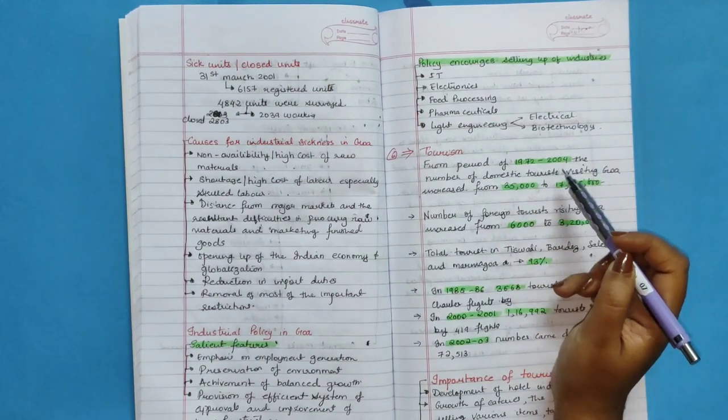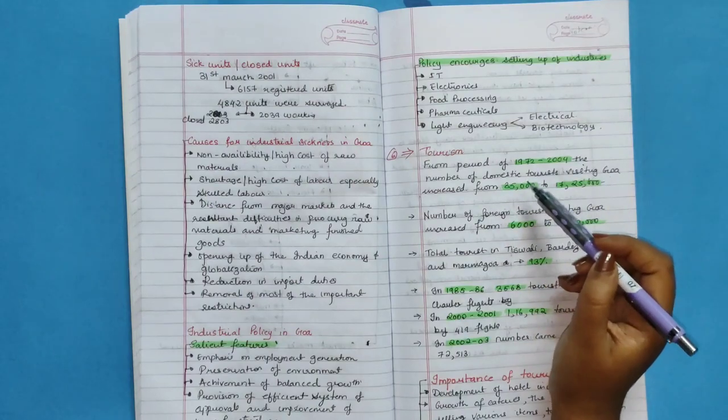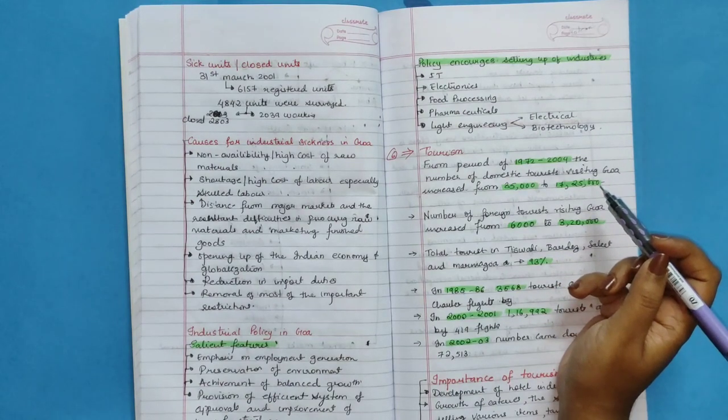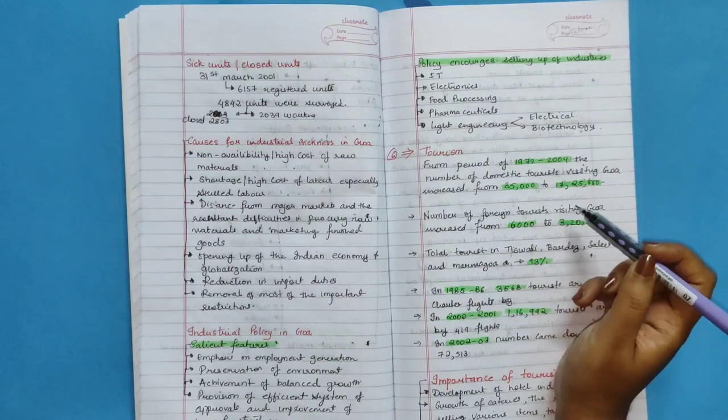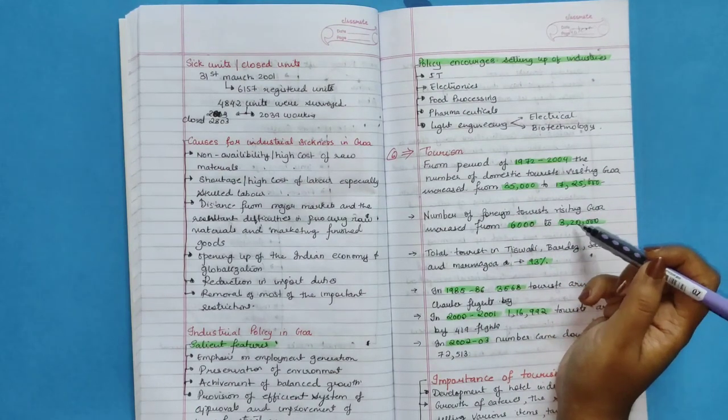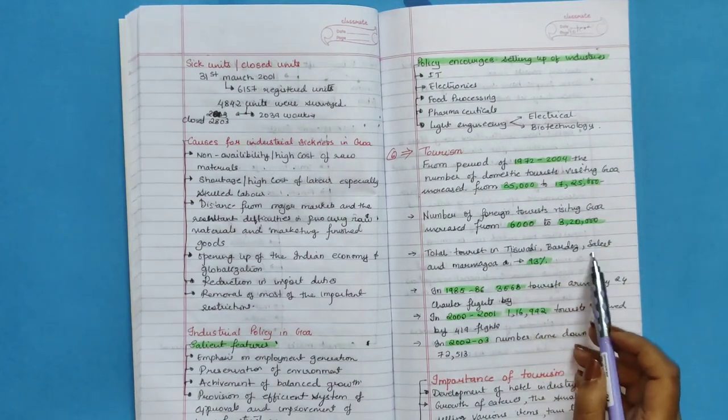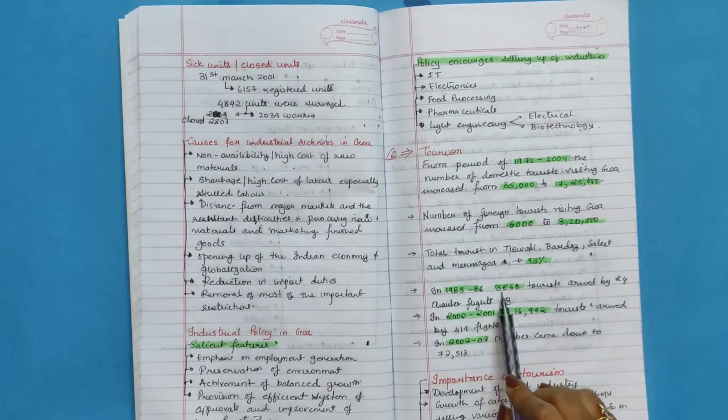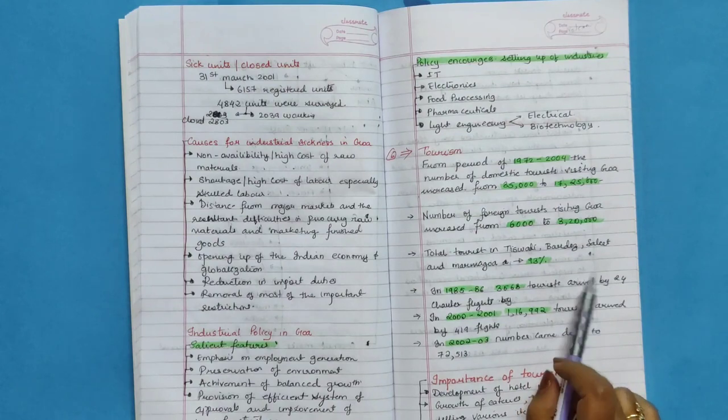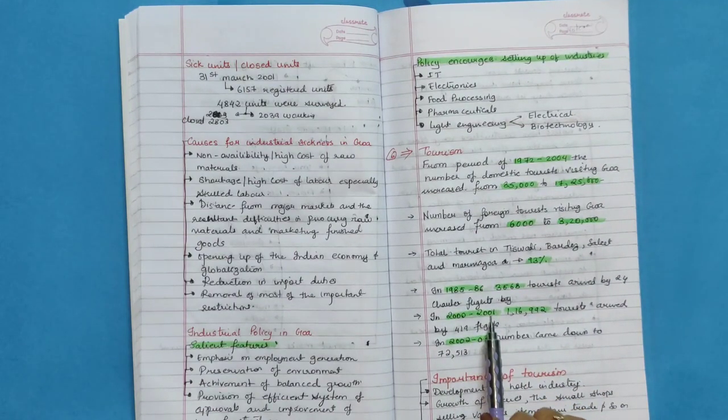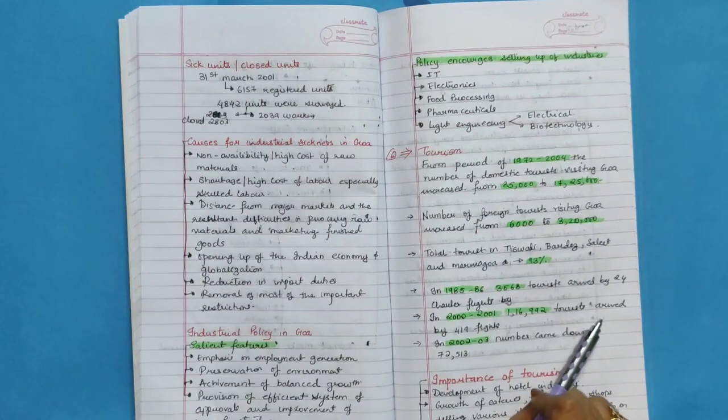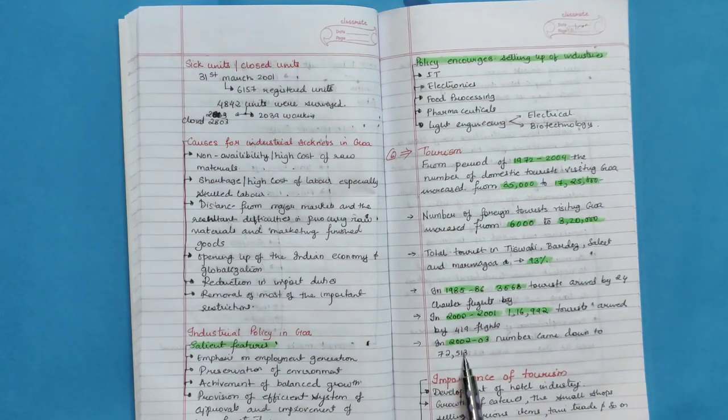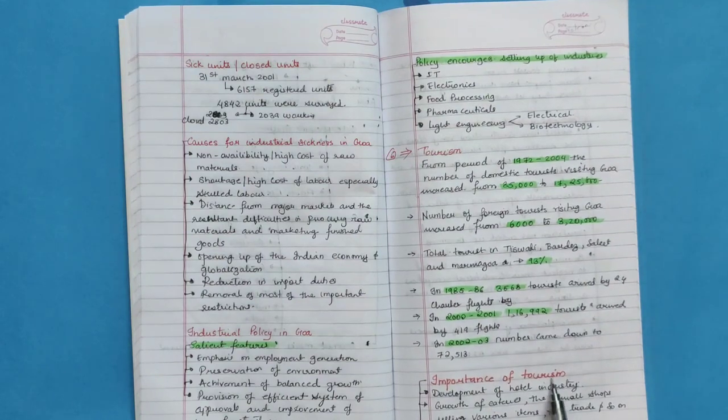Tourism. From period of 1972 to 2004, the number of domestic tourists visited Goa increased from 35,000 to 1,17,25,000. Number of foreign tourists visiting Goa increased from 6,000 to 3,20,000. Total tourist in Tiswadi, Bardez, Salcete and Mormugao is 93%. In 1985 to 86, 3,568 tourists arrived by 24 charter flights. In 2000 to 2001, 1,16,992 tourists arrived by 419 flights. And in 2002 to 2003, number came down to 72,530.